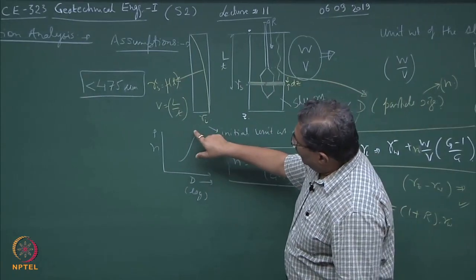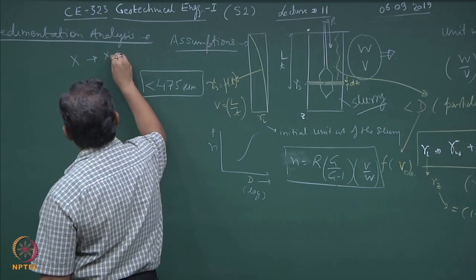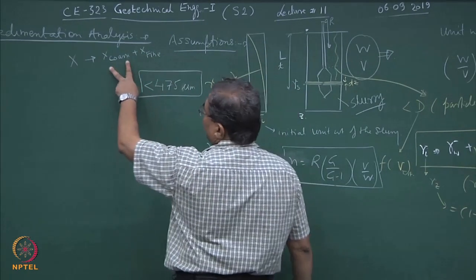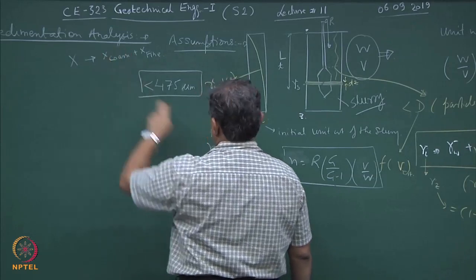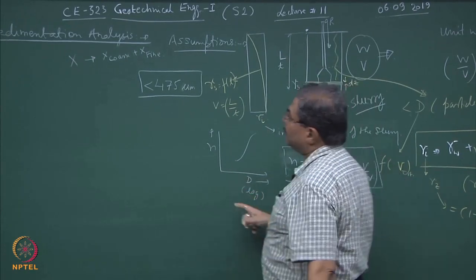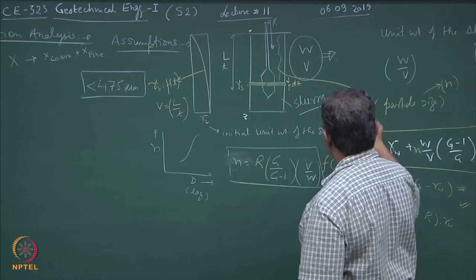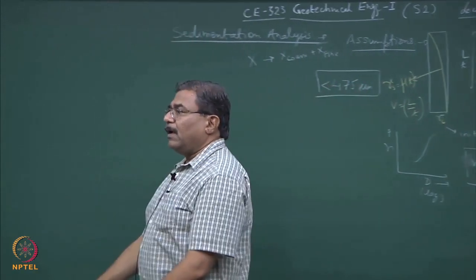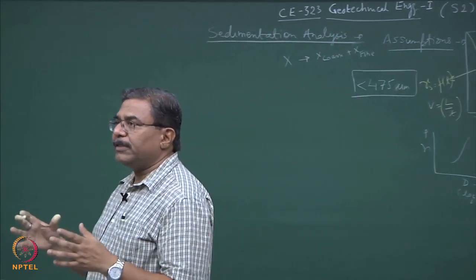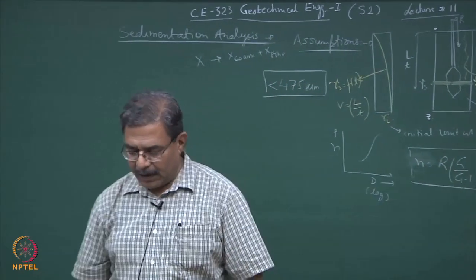You can obtain the coarse curve from sieve analysis, which I was discussing in the last lecture — percentage finer than on a log scale of the diameter. X fine you are going to get from hydrometer analysis, and the inbuilt assumption is n finer is less than d. You club the two graphs and get the complete particle size distribution curve. Many people make the mistake in assimilating information from the two tests. So sit down and practice the problems which I will be giving you today.